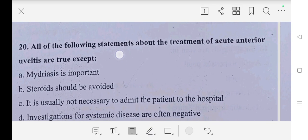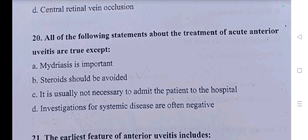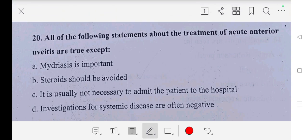Question number twenty: all of the following statements about the treatment of acute anterior uveitis are true except — A part: mydriasis is important, B part: steroids should be avoided, C part: it is usually not necessary to admit the patient to the hospital, D part: investigation for systemic disease are often negative. Our answer is B part, steroids should be avoided.